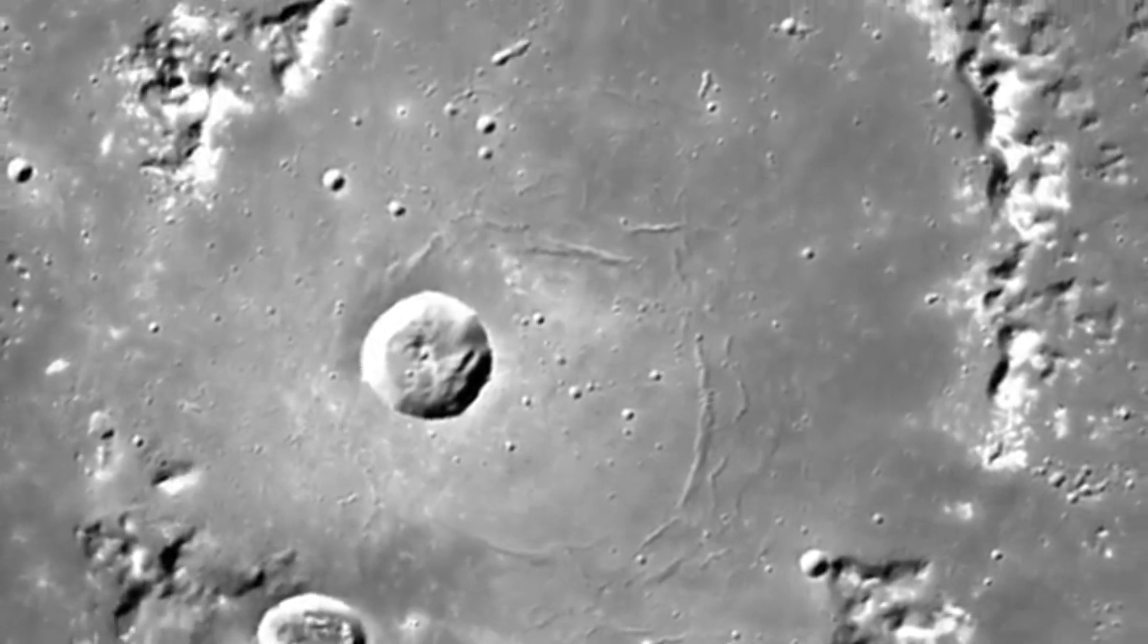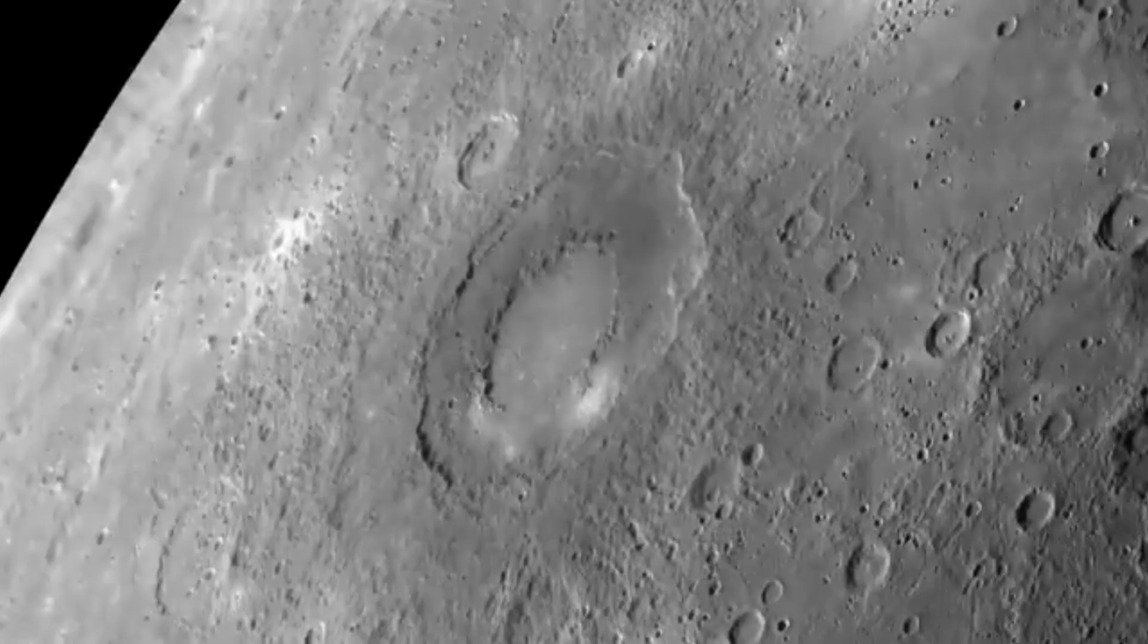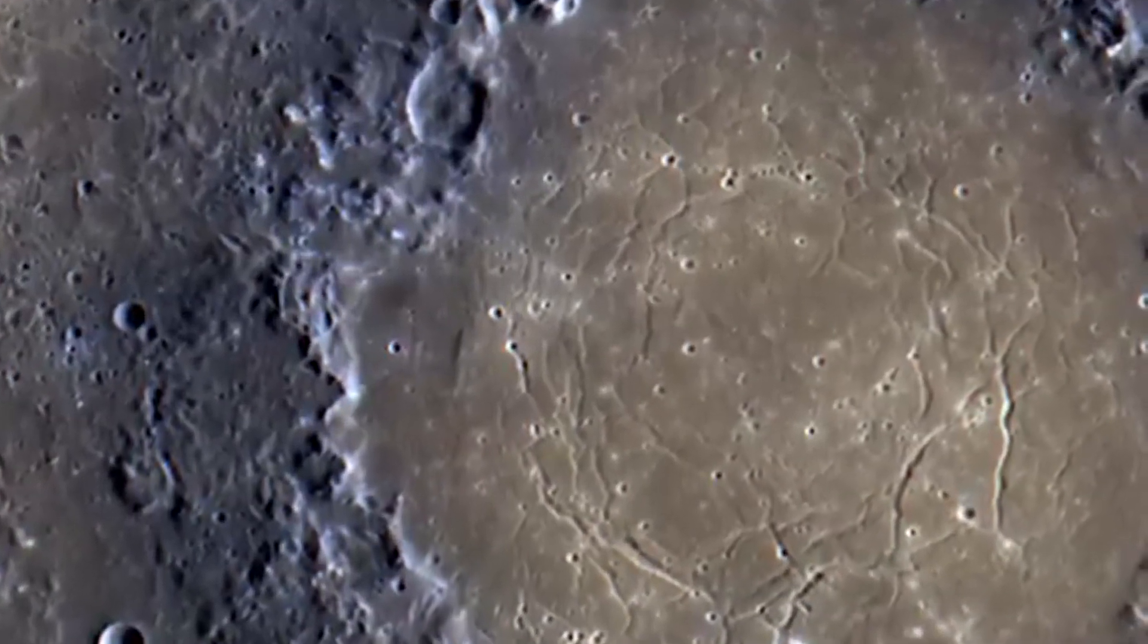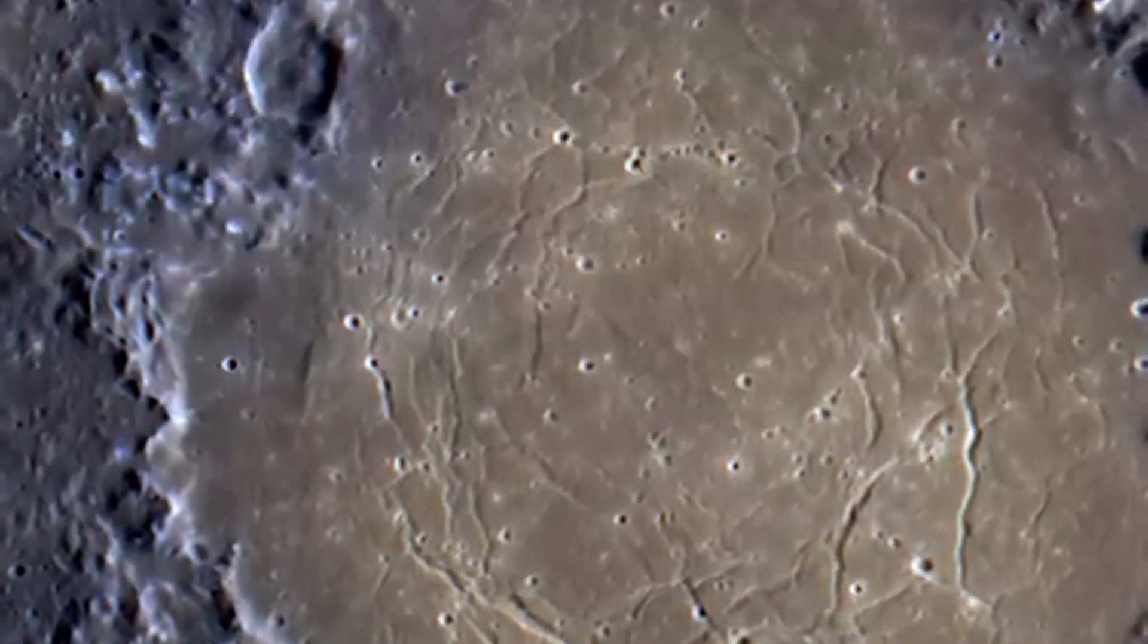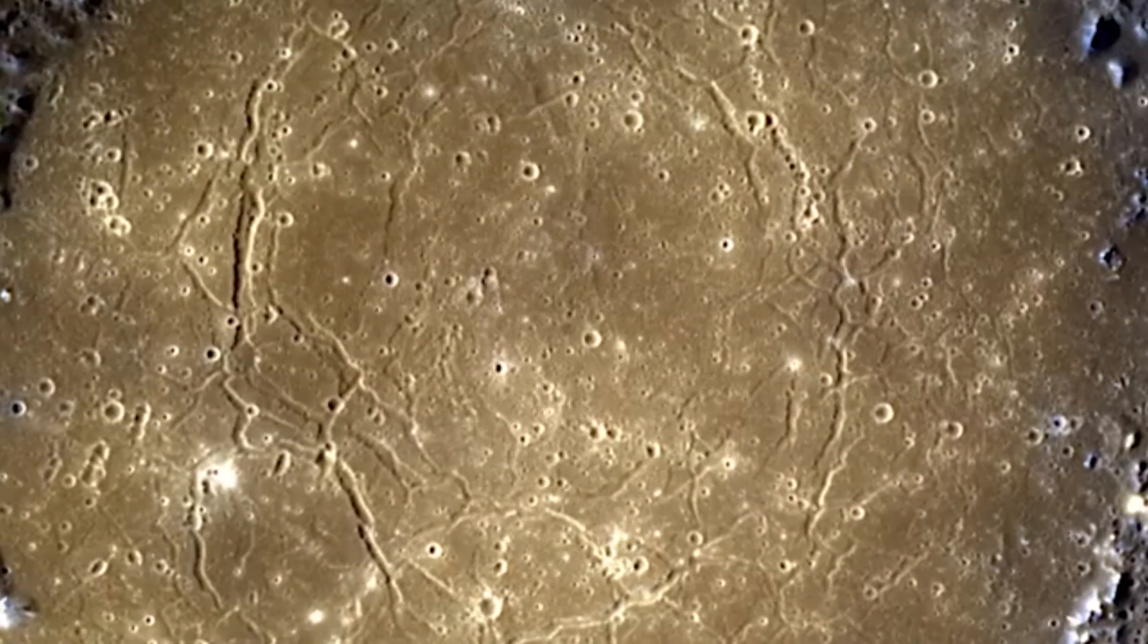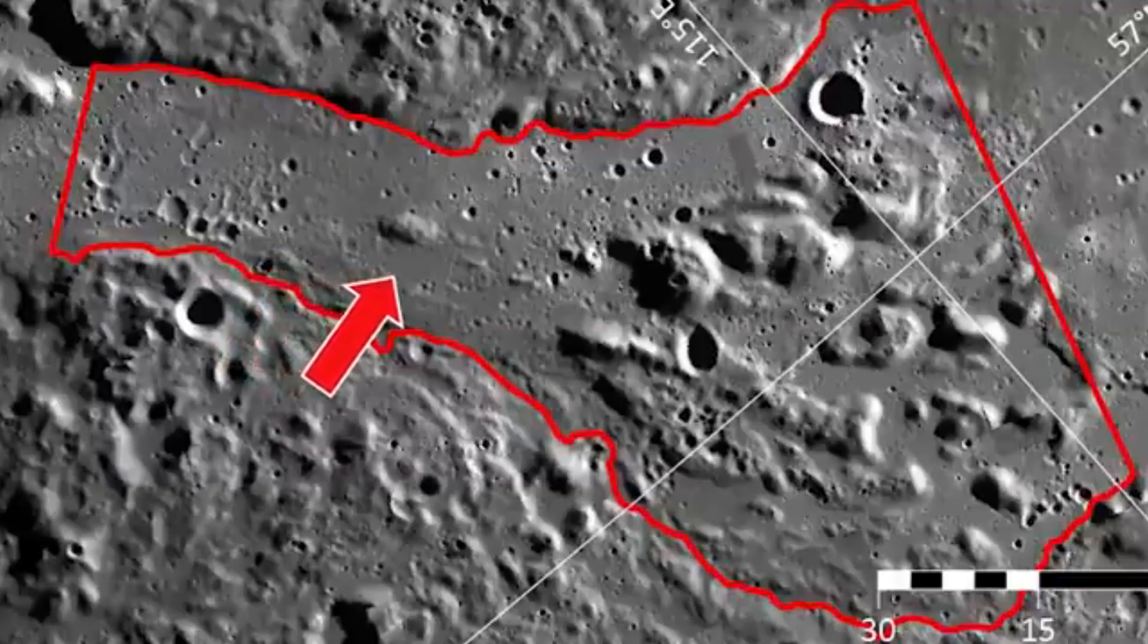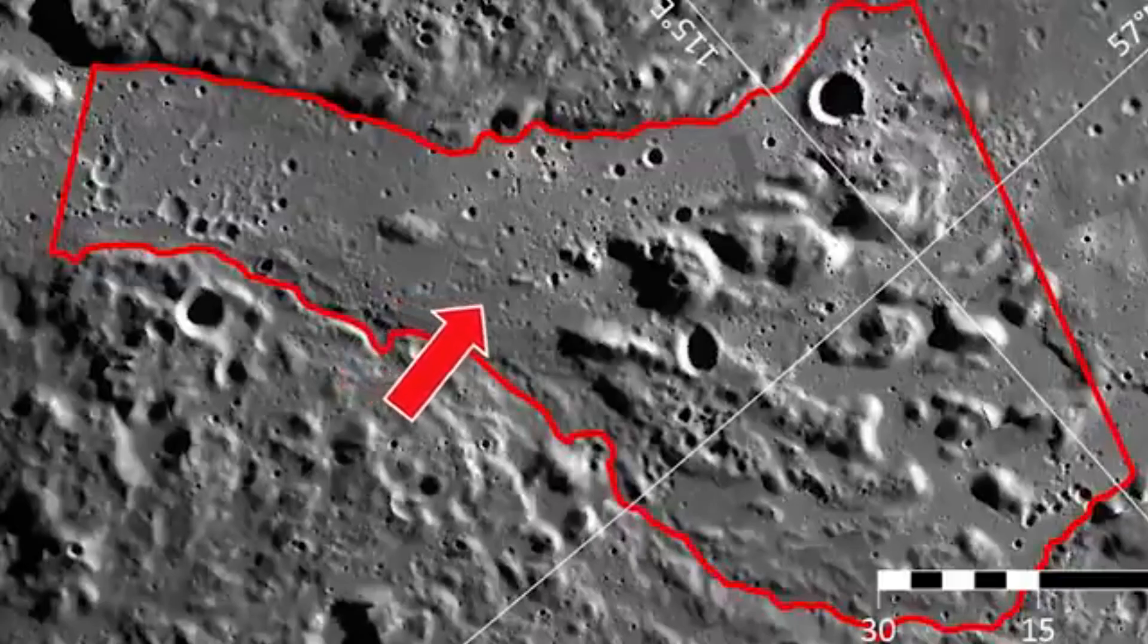A recent study of these thrust lines has produced surprising results. Mercury may still be tectonically active today. In a 2019 investigation, small features called graben, essentially small valleys formed by the stretching of the crust, were discovered near some of Mercury's largest faults. These graben appear to have formed relatively recently, suggesting that the planet's crust continues to move and adjust.